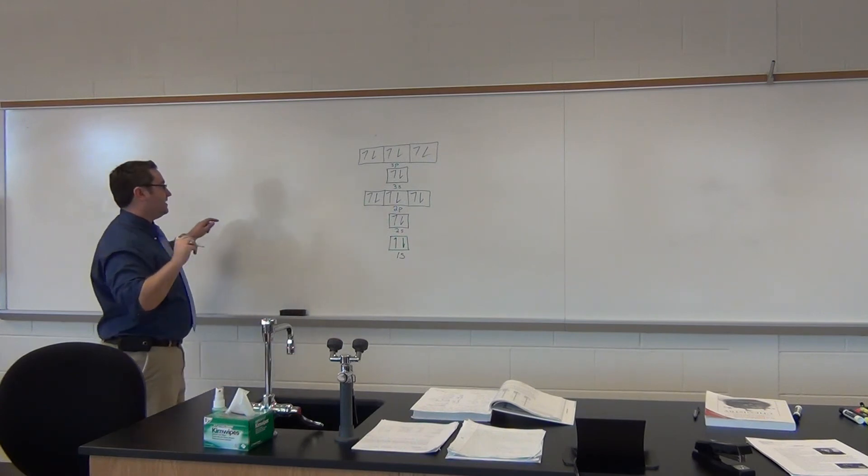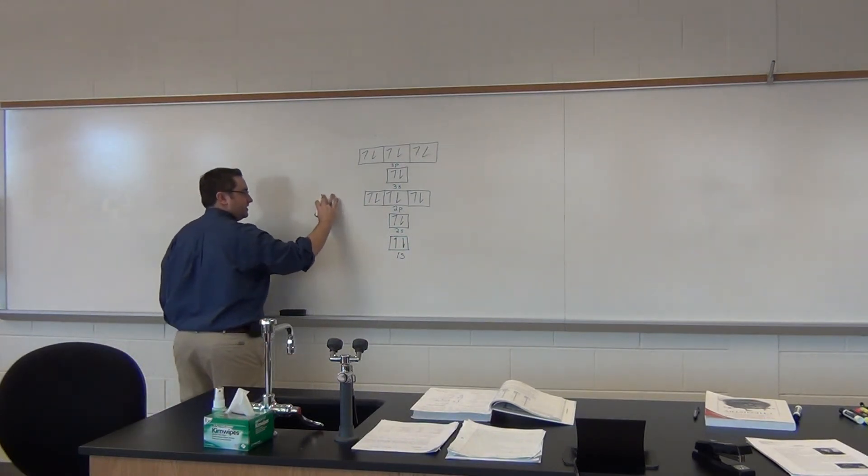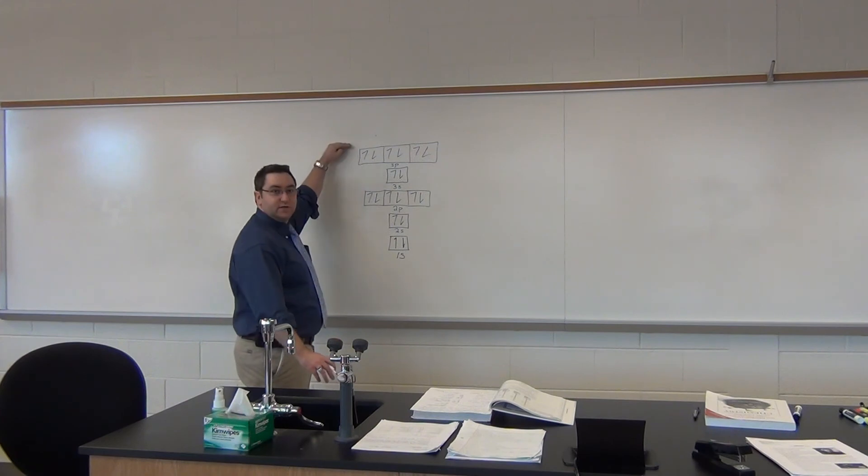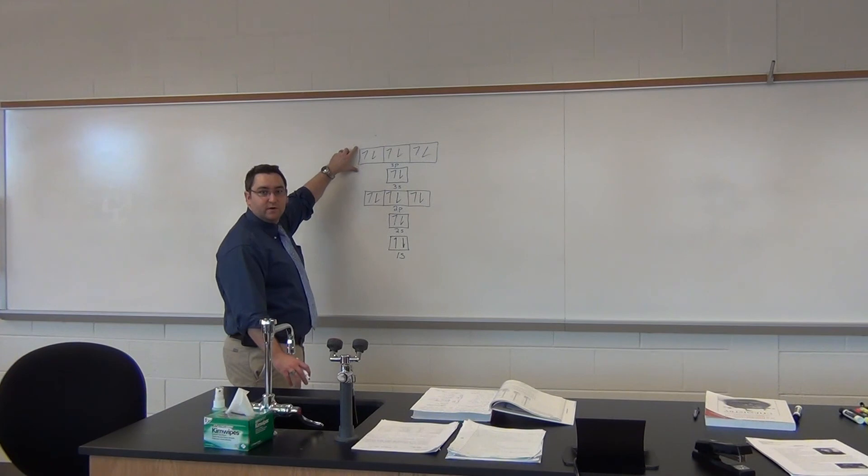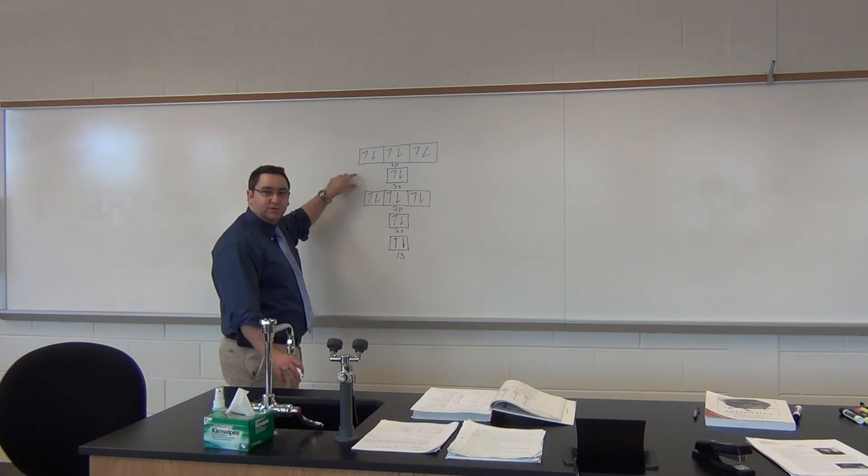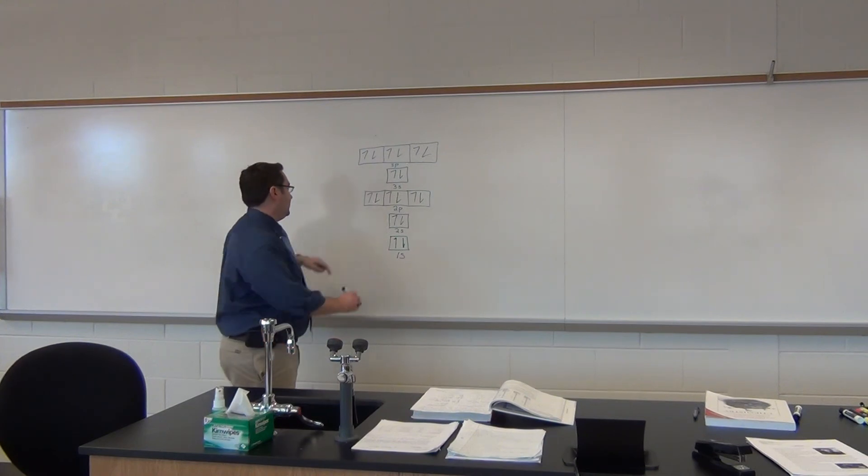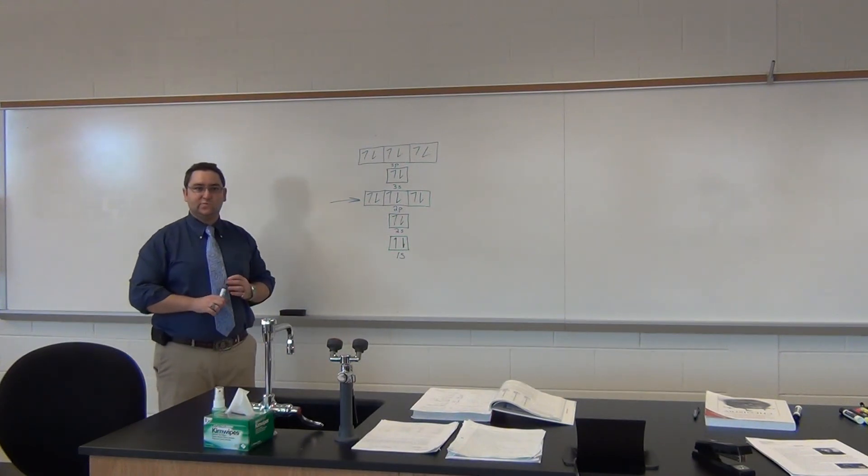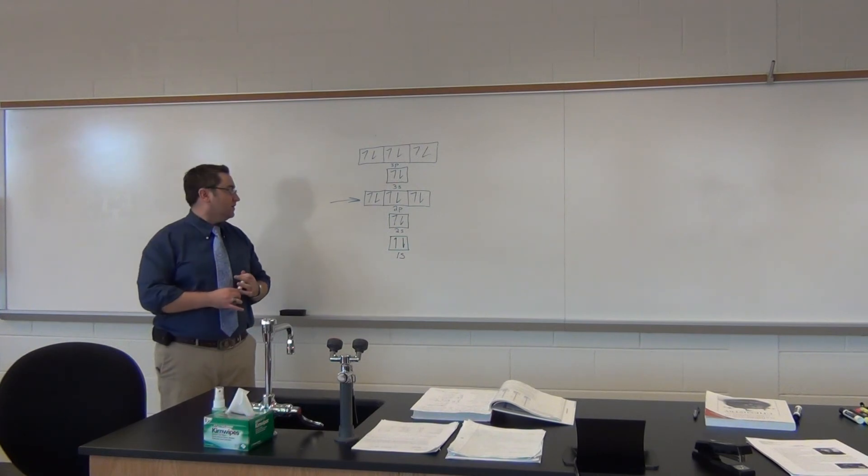So you can take your electron configuration and transpose it to an orbital diagram, but just remember they're going to increase in energy so it will look like this. I'm probably not going to go too much further than this. You'll probably see something like carbon, nitrogen, which is only going to deal with up to that level. But do know the difference between electron configuration and orbital diagram.